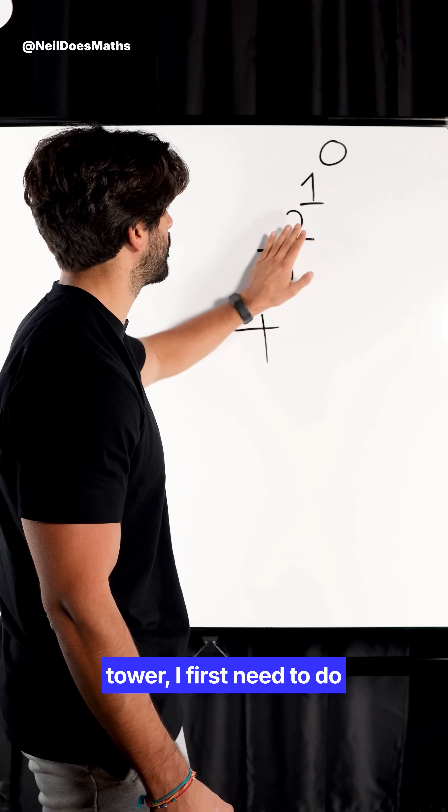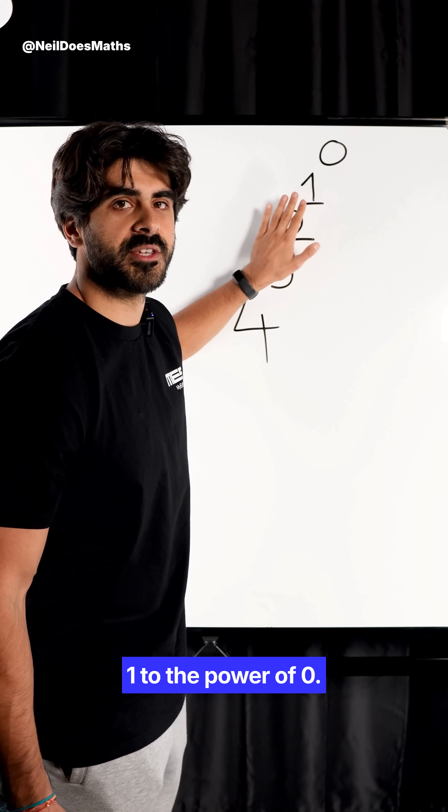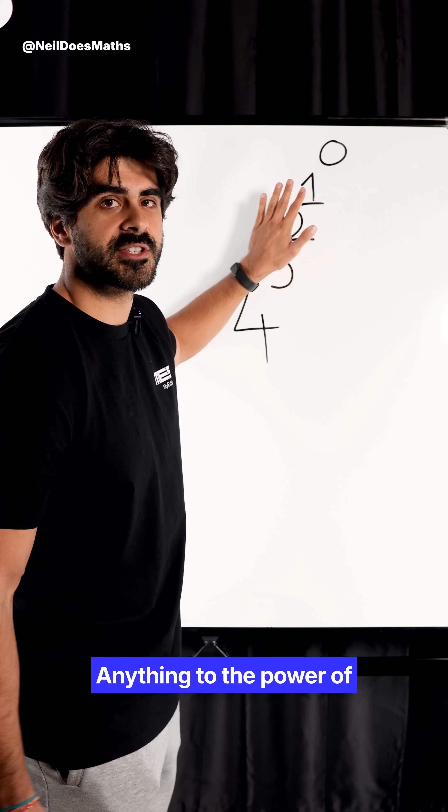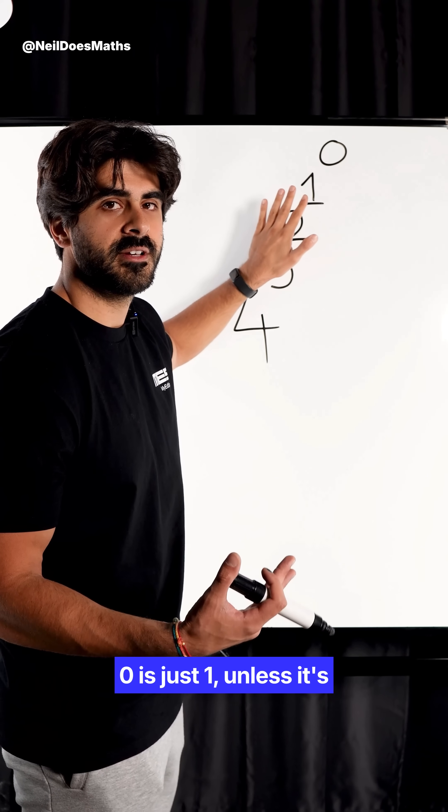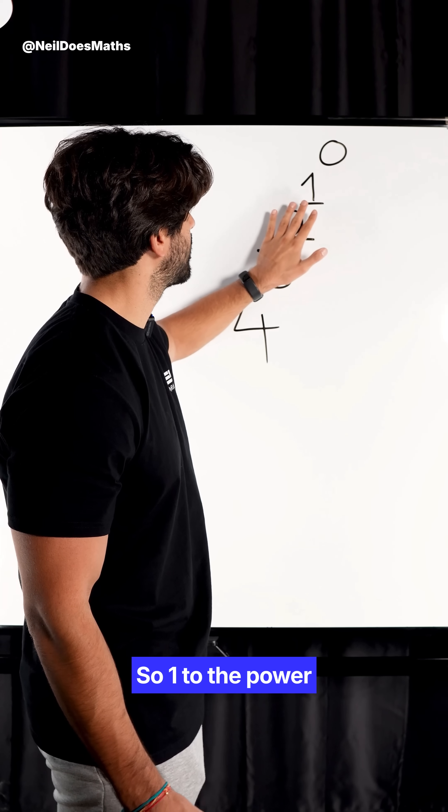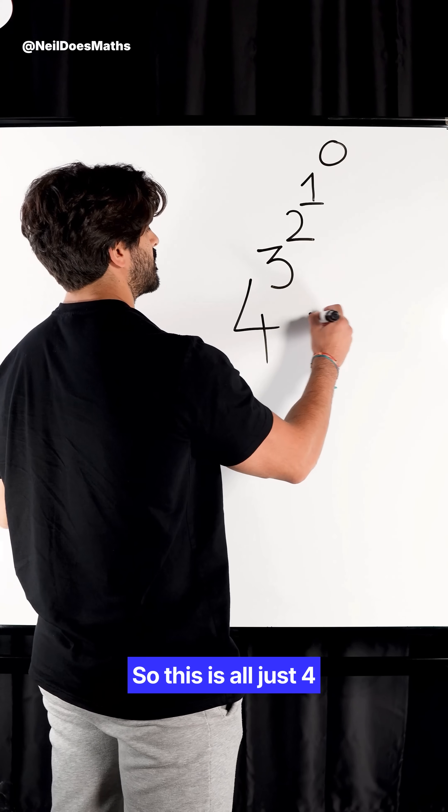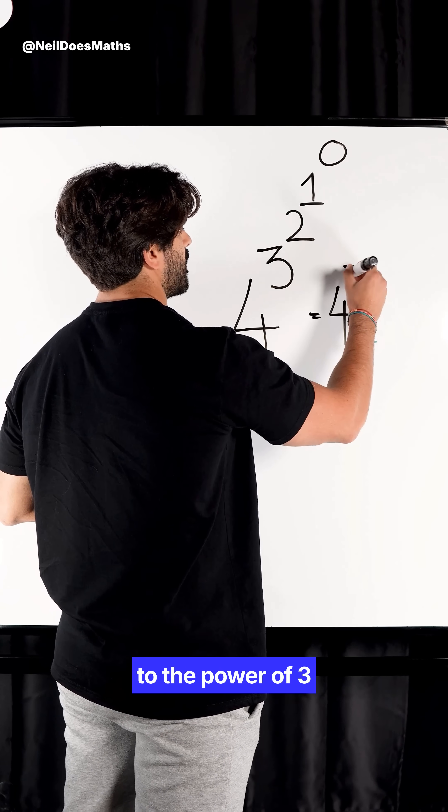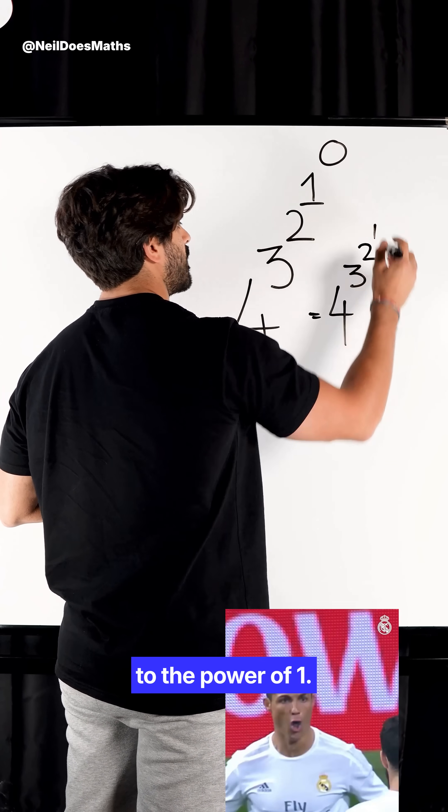So going along our power tower, I first need to do one to the power of zero. Anything to the power of zero is just one, unless it's zero to the power of zero. So one to the power of zero is just one. So this is all just four to the power of three to the power of two to the power of one.